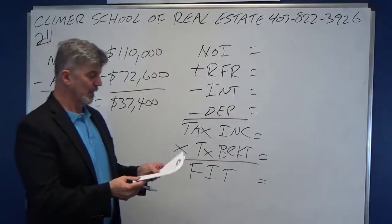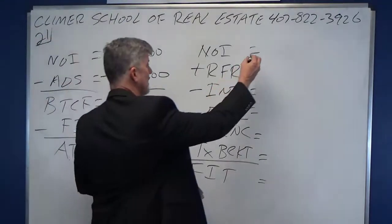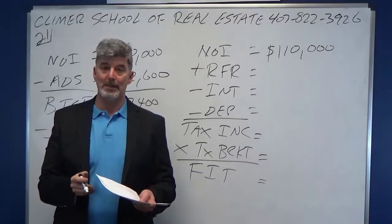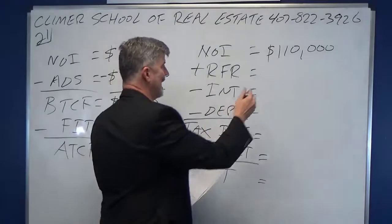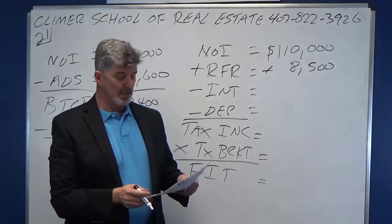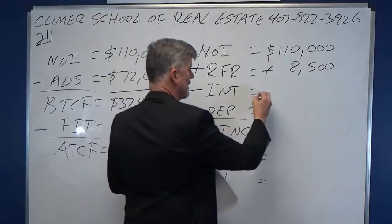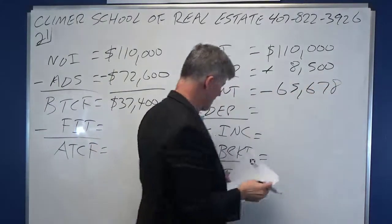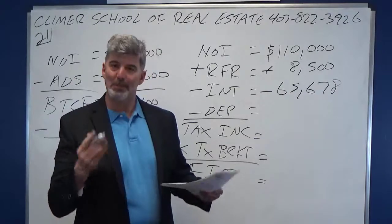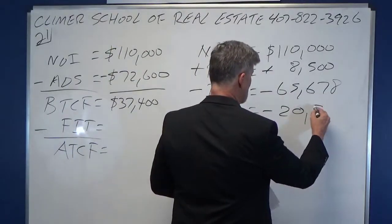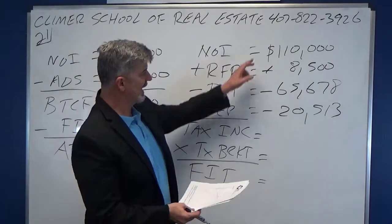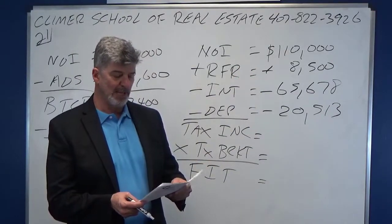Go back to NOI — what is NOI? $110,000. The problem gives it to you: reserve for replacements, which is part of the expenses but to the IRS is income. We're going to add back in $8,500. We get to write off mortgage interest, which according to the problem is $65,678. We get to write off depreciation — fake loss, but savings is savings — and they give it to us in the problem: $20,513. If I take NOI, add $8,500, subtract $65,678, and subtract $20,513, what that gives me is $32,309.